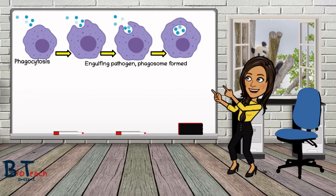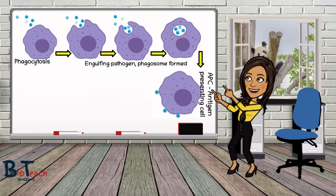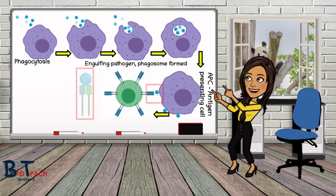In phagocytosis we see the engulfing of the antigen or pathogen and the phagosome being formed. Once the pathogen has been destroyed or hydrolyzed, the macrophage presents the antigens on its own cell surface membrane — at this point we call it the antigen-presenting cell or APC. These antigens are recognised by helper T-cells, which bind to the antigen and to the macrophage receptor, leading to activation of helper T-cells. You can see the red box highlighting this binding, with a close-up on the left.